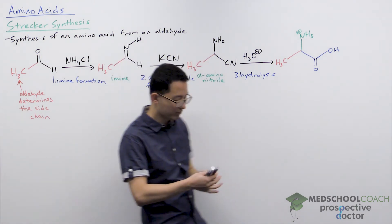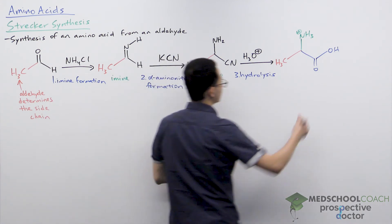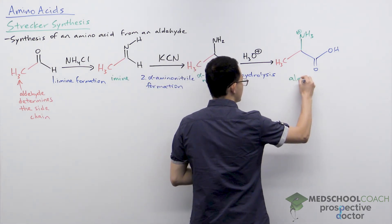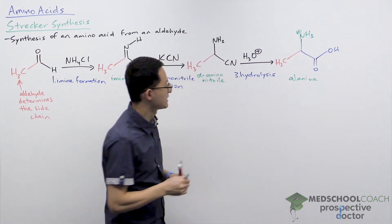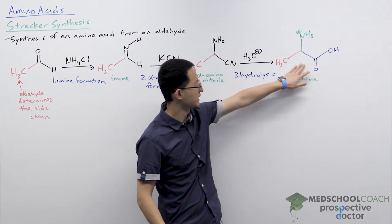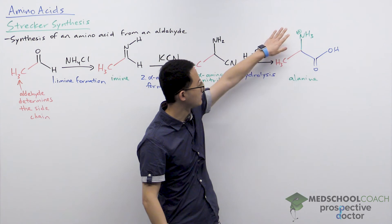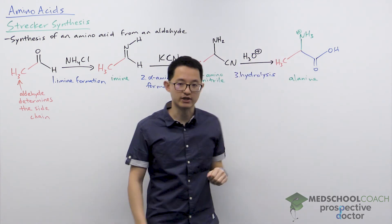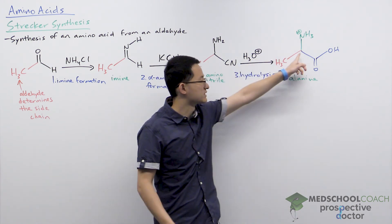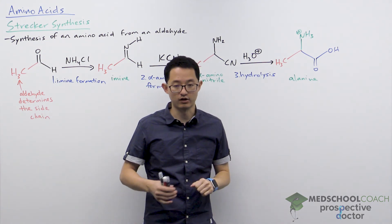So this is going to form our product, and you can see that our product right here is alanine, where we have all the different components of amino acids. You have the carboxylic acid functional group, you have the amino group, you have the side chain, and not drawn in of course is the hydrogen that is also connected to that alpha carbon.